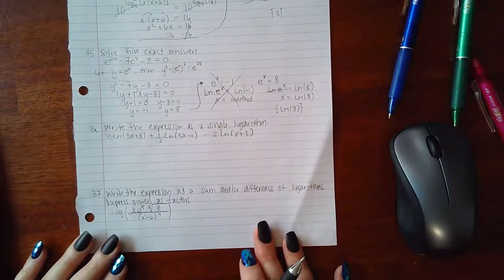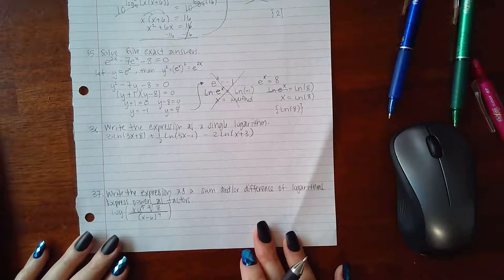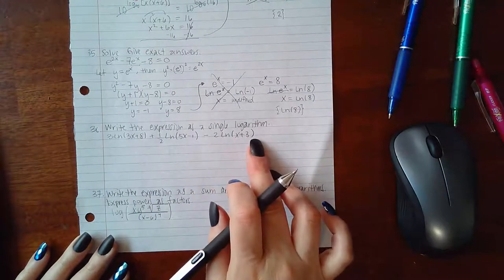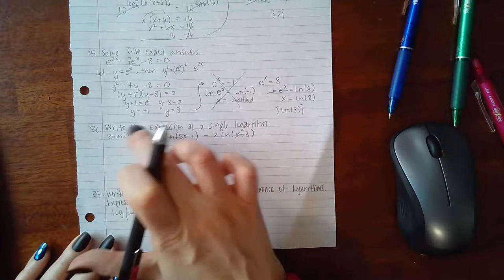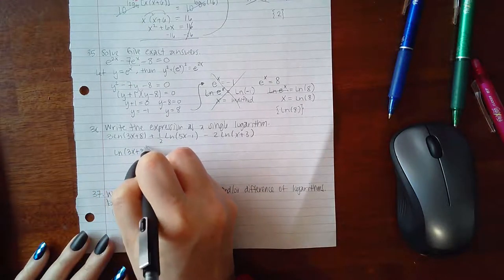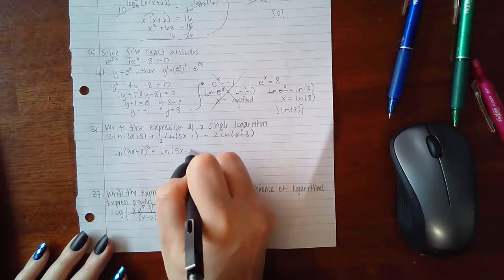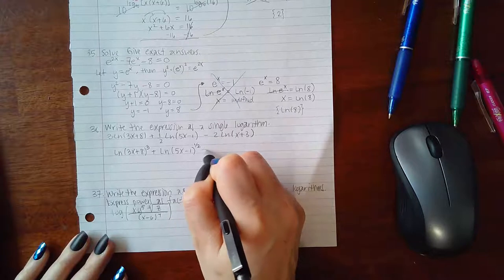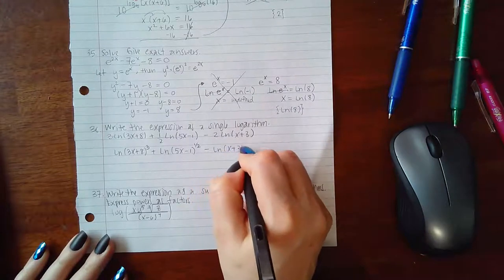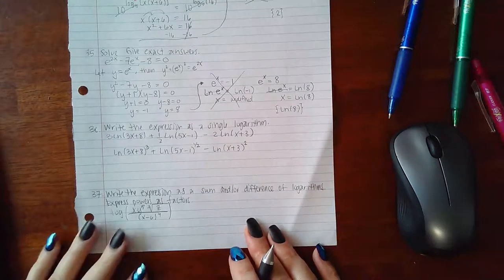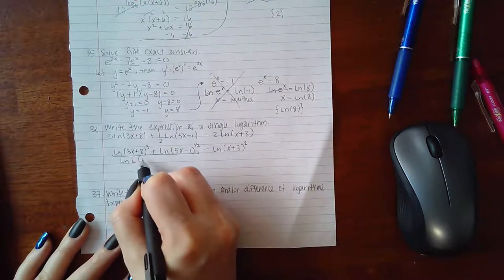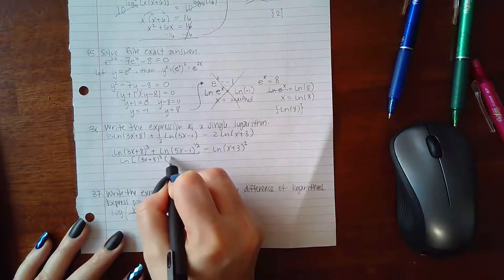For number 36, they want us to write the expression as a single logarithm. We're going to first get rid of the coefficients using the property that allows us to take that coefficient and apply it as an exponent. This will become ln of (3x plus 8) cubed plus ln of (5x minus 1) to the one half minus ln of (x plus 3) raised to the 2. When I'm adding, that puts these two together by multiplying the arguments.